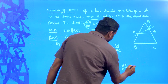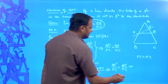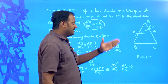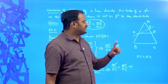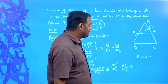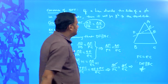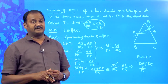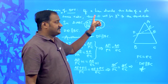Therefore, DE is the only line parallel to BC. DF cannot be parallel to BC, because if DF were parallel to BC then F and E would not be the same point. So therefore DE is parallel to BC. This proves the converse of basic proportionality theorem: if a line divides any two sides of a triangle in the same ratio, then it will be parallel to the third side.